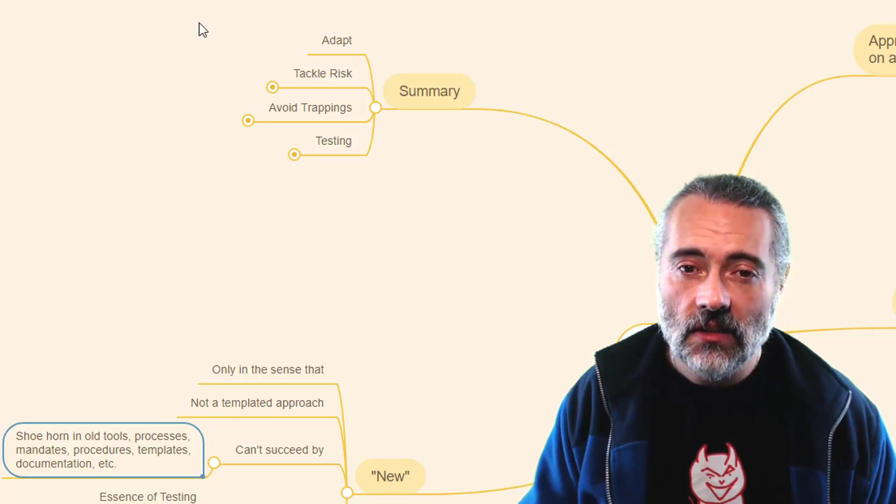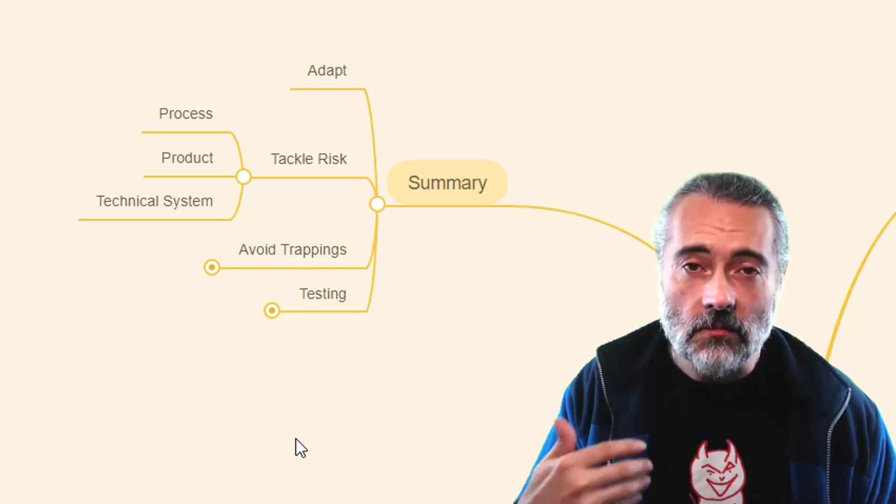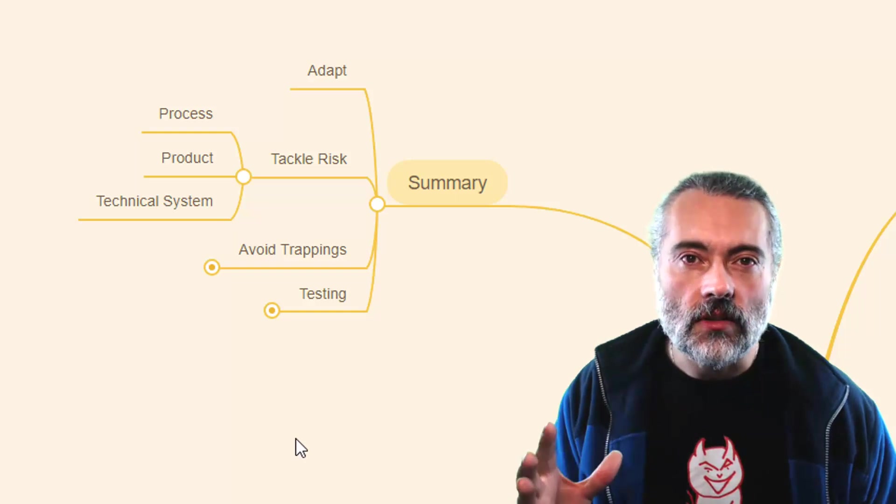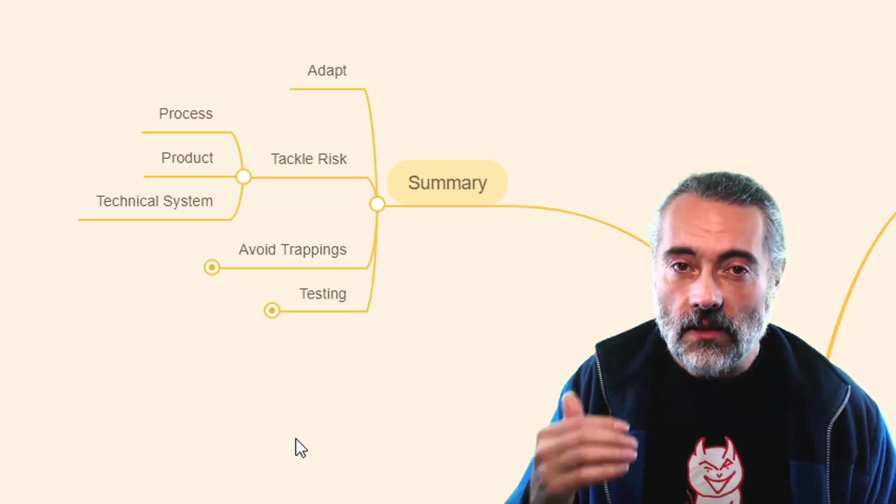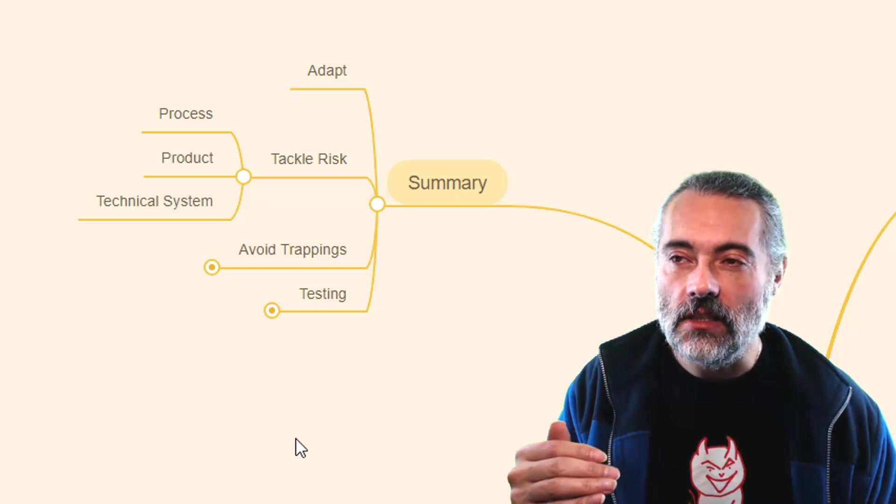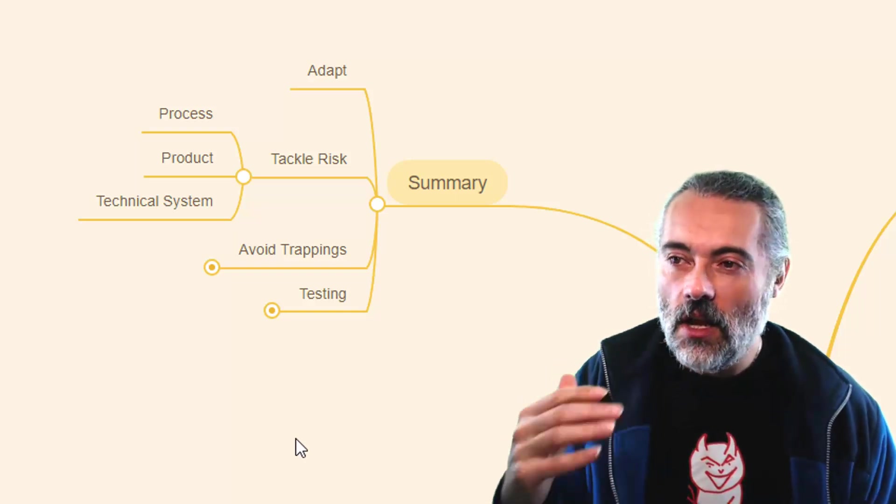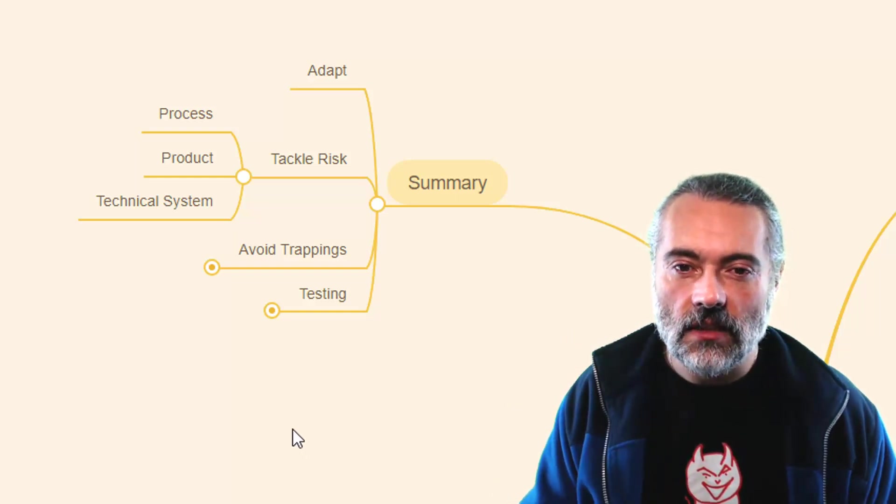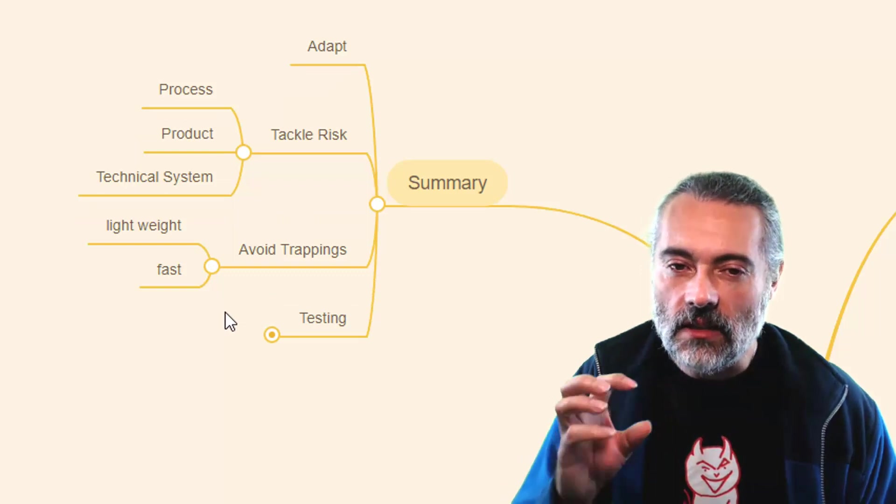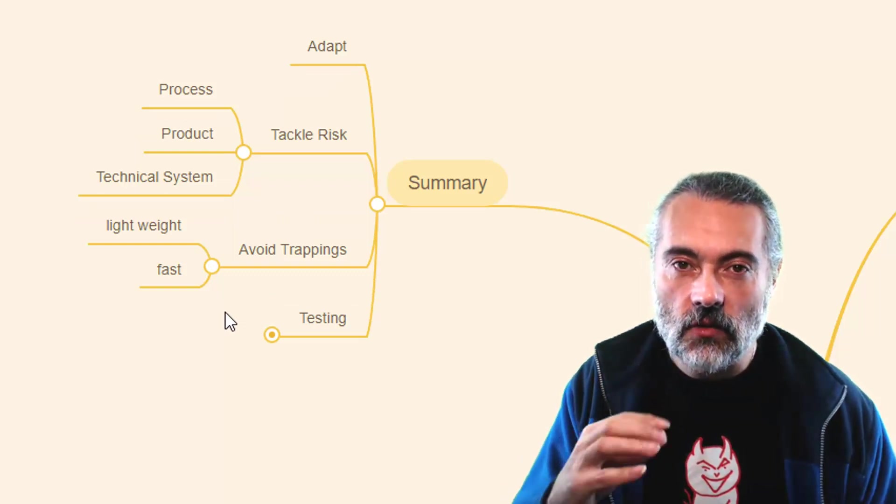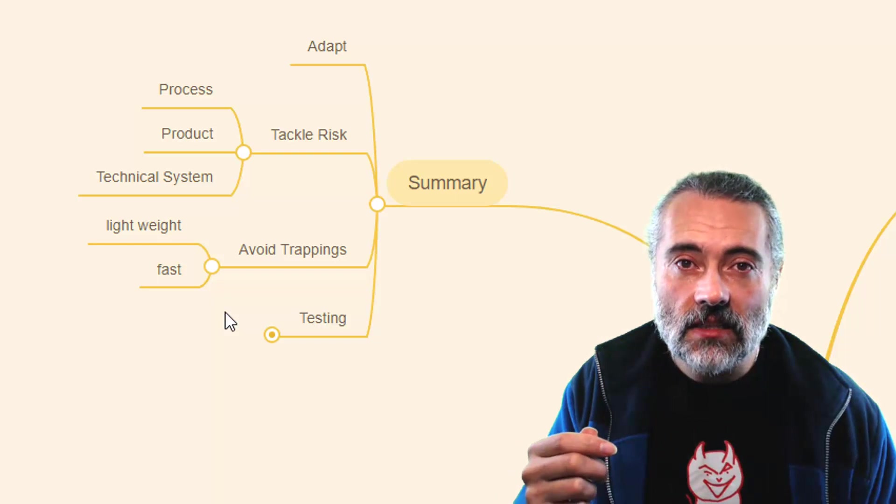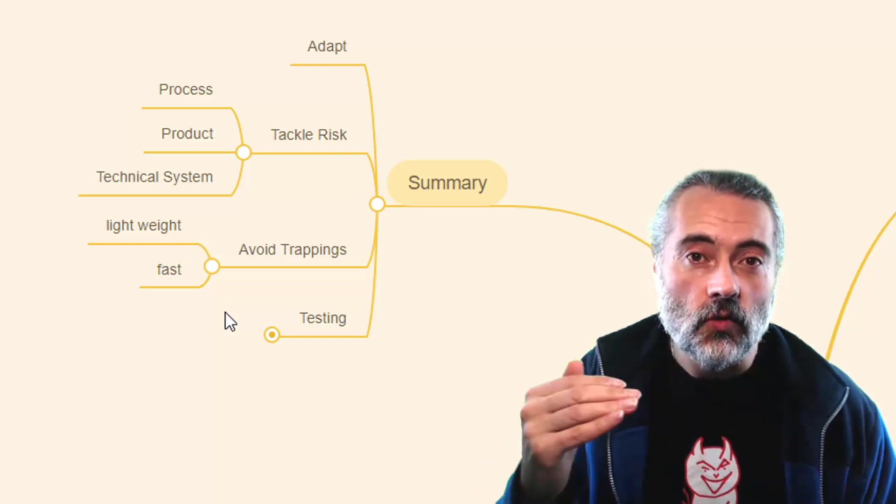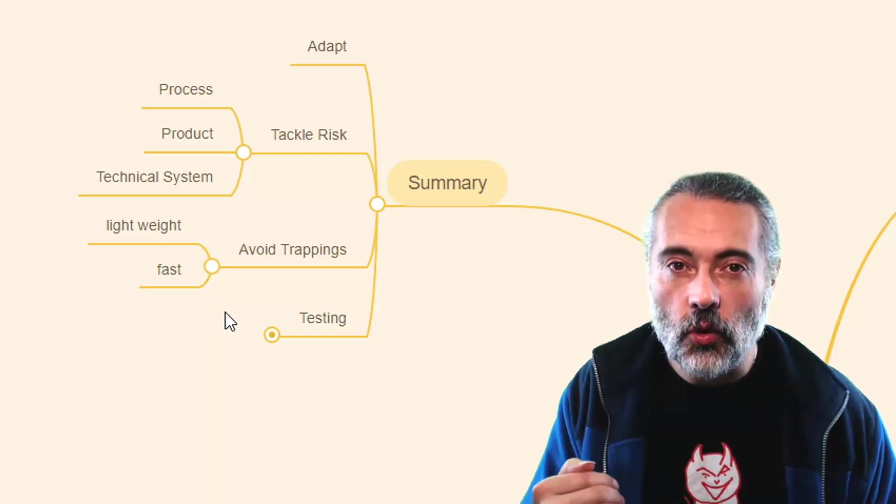We tackle risk. Lots of risk. Process risks. The way that we actually build the system. We might change our test approach based on that. The actual product risks that we're prepared to cope with. The technical way that we're building the system, where we can test, how we can inject data, what tools we need to work with. All of these things change how we approach our testing. We want to keep things as lightweight, as lean, as fast as we can to avoid trappings. But that doesn't mean we neglect the persistent mechanisms in our communication process. That doesn't mean we don't write things down. It just means that we write down the things that are important.